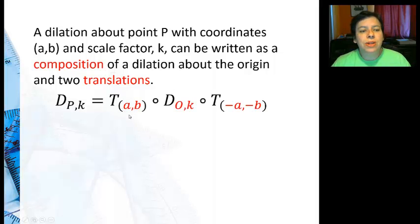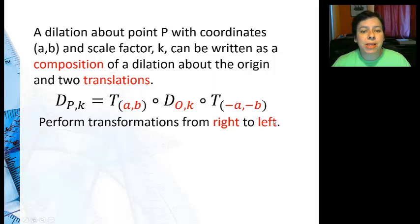So what it's going to look like, first of all, this is from right to left. Remember when we have our functions here, our transformations, we go from right to left. So I'm going to do the opposite of the point because I'm trying to take it to the origin, which is (0,0). So that's why you see the negative a and negative b there. Do my dilation and then put my point back where it was.